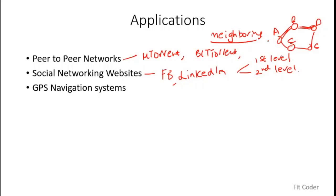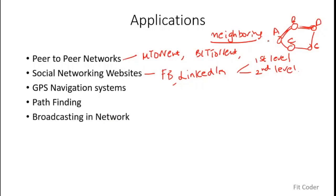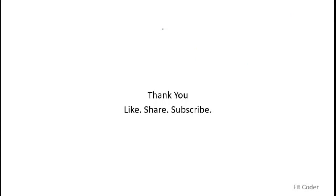Another application is GPS navigation systems. For example, Google Maps can use BFS traversals to find the nearest coffee shop within one kilometer by checking neighboring nodes at a given distance — where edge weights represent distance. BFS is also used in pathfinding in games and software to find the shortest route to a destination, though DFS can also be used there. Additionally, BFS is used in network broadcasting to send messages to all nodes in a LAN or peer-to-peer network, and in garbage collection to find all related references to be freed.